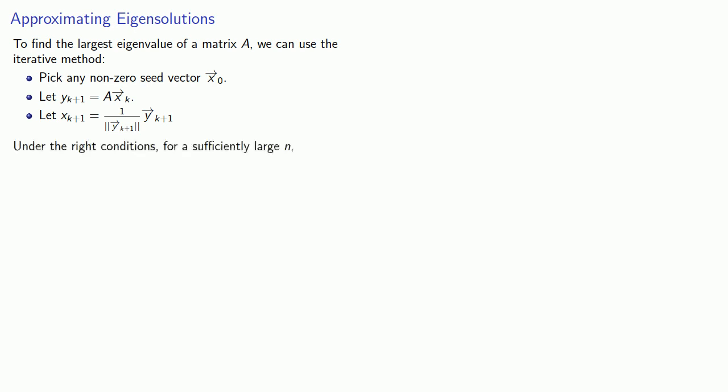Under the right conditions for a sufficiently large n, xn will approximate an eigenvector, and the corresponding eigenvalue will be the dot product of xn with A applied to xn.